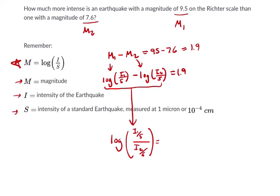and the S's cancel out. So we get the log of I sub 1 over I sub 2. And that equals 1.9.